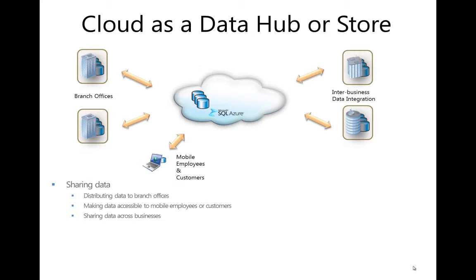Let's talk about using the cloud in the context of a data hub or a data store. There are really two main scenarios. For example, in the branch office pattern, you have a single enterprise but multiple locations and a lot of different employees accessing data from different locations. This pattern involves multiple publishers and subscribers and these branch offices having a need to share data.